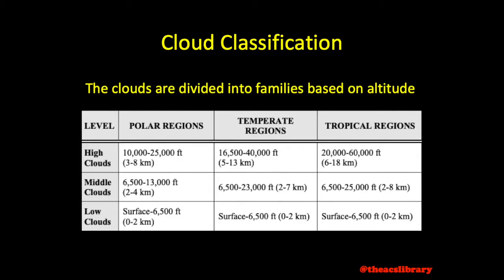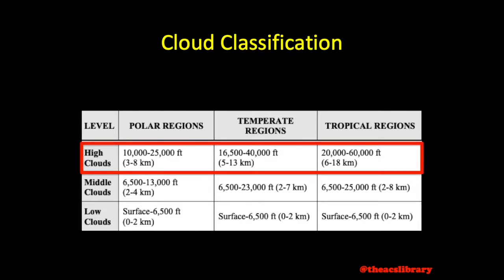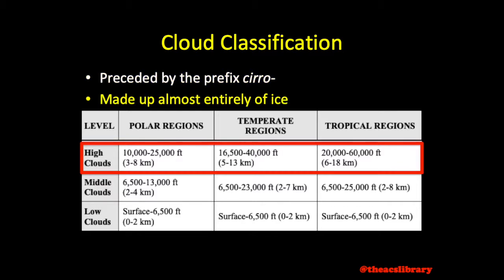Clouds are divided into families based on altitude. The high altitude clouds have bases at an average height of roughly 35,000 feet, dependent on latitude — a minimum of 10,000 feet at the poles and a maximum of 60,000 feet at the equator. These clouds are preceded by the prefix 'cirro' and are made up almost entirely of ice.